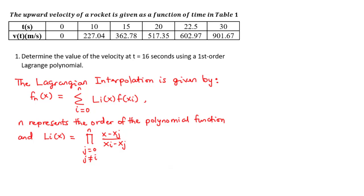In the previous lesson, we looked at the direct method of interpolation and solved an example on that. Now, in today's lesson, we are going to consider the Lagrangian method of interpolation and specifically, we will be solving a question on linear interpolation — that is where we consider a polynomial function of the first order. Let's get into today's lesson.